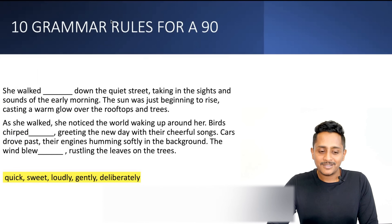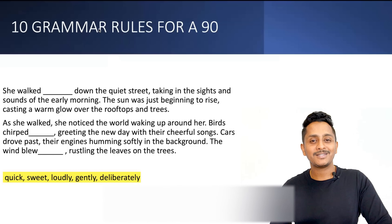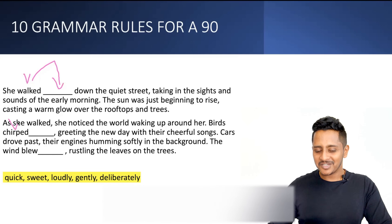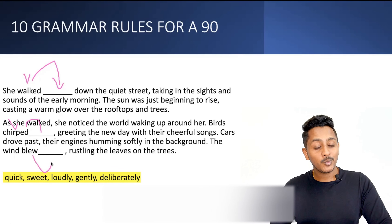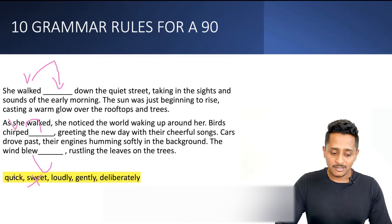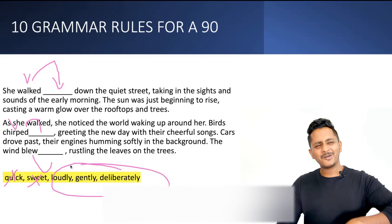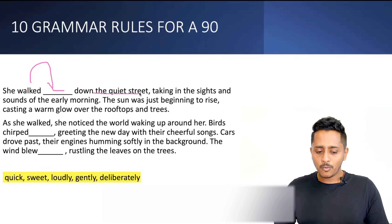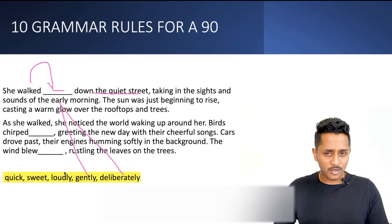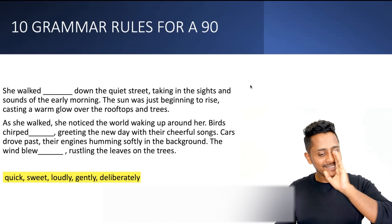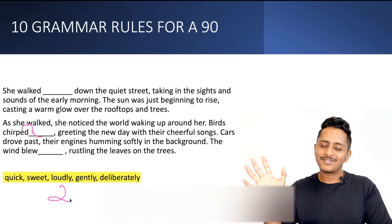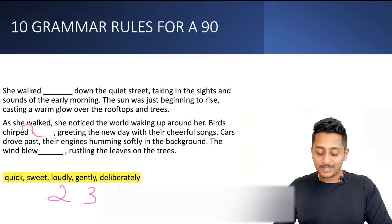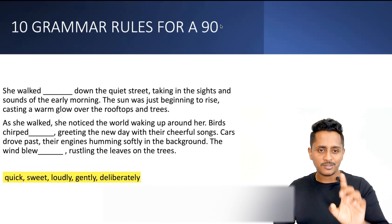Example: 'She walked dash, the birds chirped dash, the wind blew dash' — all verbs, so adverbs ending in '-ly' are needed. 'Sweet' and 'quick' are ruled out. Context: 'She walked deliberately down the quiet street', 'the birds chirped loudly', 'the wind blew gently' — 'gently' goes with 'wind'. So the answers are: she walked deliberately, the birds chirped loudly, the wind blew gently. Context also matters along with grammar.